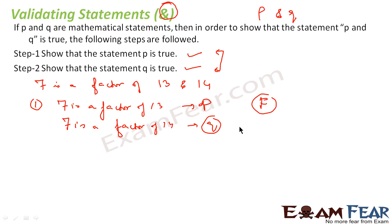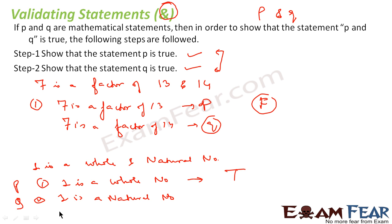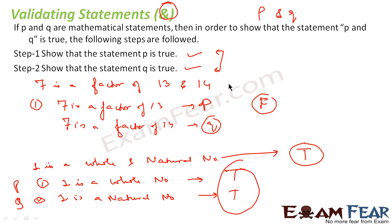Let's take one more example. If we say that 1 is a whole and natural number, there are two statements: p is '1 is a whole number' and q is '1 is a natural number.' To prove the compound statement, we first prove p — yes, 1 is a whole number, so p is true. Then q — yes, 1 is a natural number, so q is also true. Since both statements are true, the compound AND statement is true.